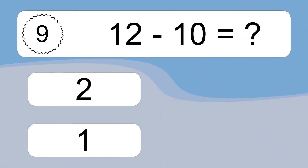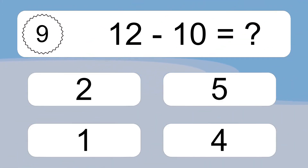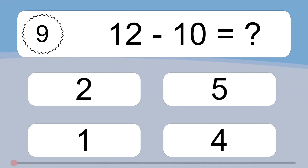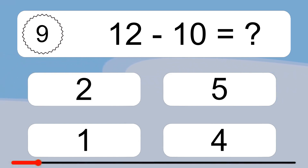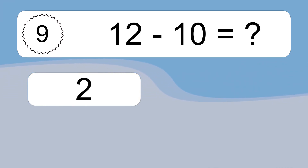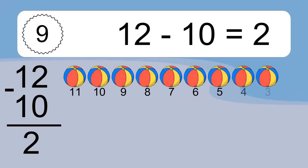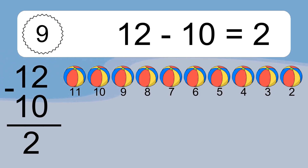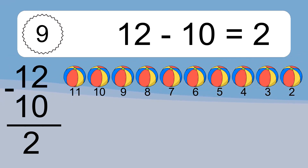12 minus 10 equals what? 12 minus 10 equals 2. Let's count it. 11, 10, 9, 8, 7, 6, 5, 4, 3, 2.